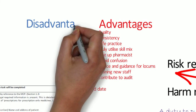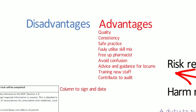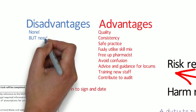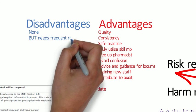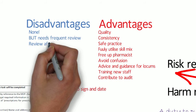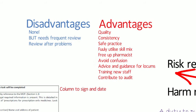The disadvantages of standard operating procedures? There are really none — unless you don't review them frequently, or don't review them when mistakes or problems occur. SOPs need to fit the environment where they're being used, and if mistakes or problems occur they need to be reviewed to determine whether there's a problem with the process rather than a human error being the attributable factor.